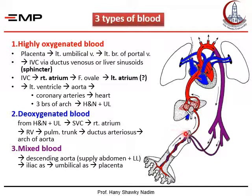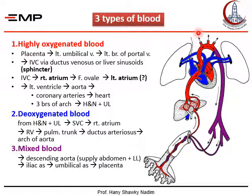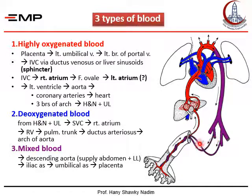In summary: highly oxygenated blood from the umbilical vein passes through the ductus venosus — with the sphincter controlling flow — to the inferior vena cava, right atrium, foramen ovale, left atrium, left ventricle, ascending aorta, and arch of aorta, supplying highly oxygenated blood to the heart, brain, and upper limbs. Return of unoxygenated blood through the superior vena cava to the right atrium, right ventricle, pulmonary trunk, left pulmonary artery, and ductus arteriosus, mixing with blood in the descending aorta, to the iliac arteries, umbilical arteries, and back to the placenta for re-oxygenation.